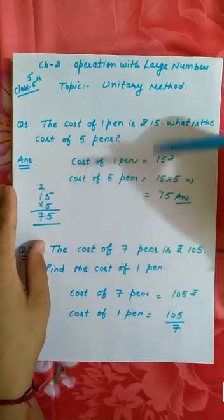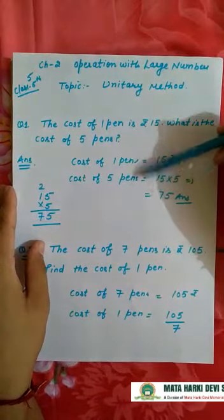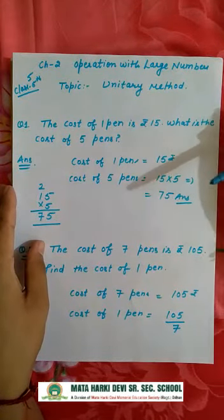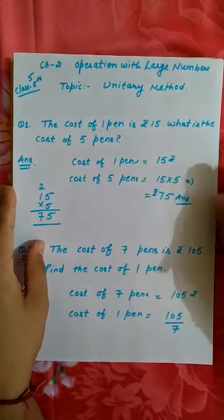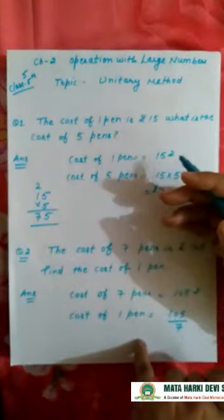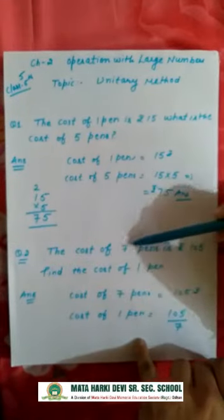So cost of five pens is 75 rupees. Okay, so next example: the cost of seven pens is 105 rupees, find the cost of one pen.